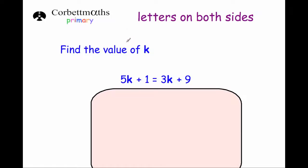In this Corbettmaths primary video, we're going to look at how to solve equations with letters on both sides of the equation. An example: find the value of k, where 5k + 1 = 3k + 9.